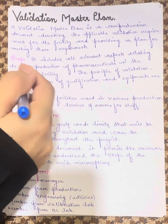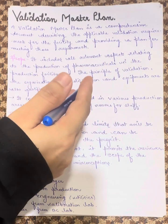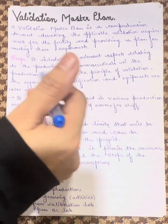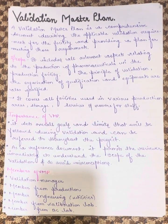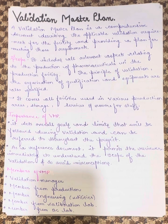The principle of validation covers the organization of qualification and ensures that equipment are qualified. It covers all facilities used in various production areas, storage, services, and rooms for staff.